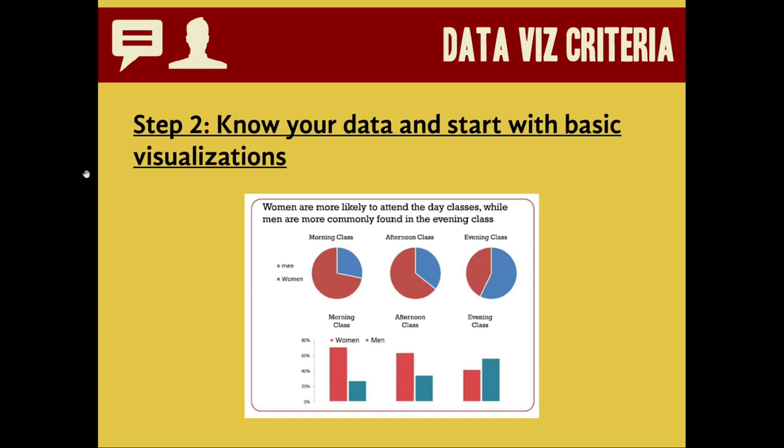So here's a simple data visualization showing off how women are more likely to attend morning classes at a particular university, whereas men are more likely to attend evening classes. Now, which is the more appropriate visualization here? The pie chart or the bar graph?